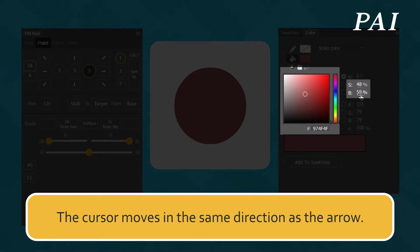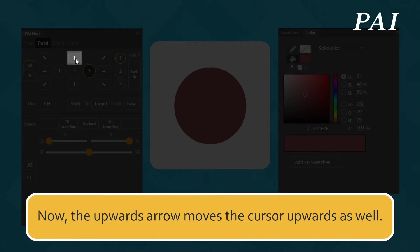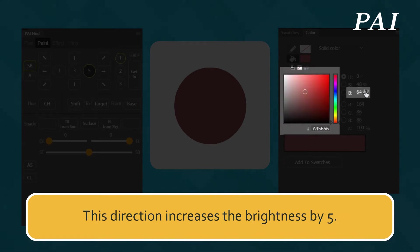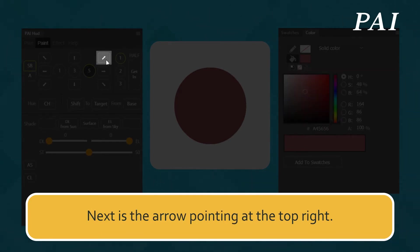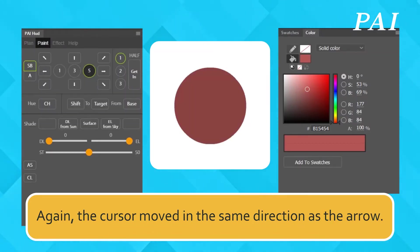The cursor moves in the same direction as the arrow. The upper-left direction decreases the saturation and increases the brightness by 5. The upward arrow moves the cursor upwards, which increases the brightness by 5. The arrow pointing to the top right increases the saturation and increases the brightness by 5. The cursor moved in the same direction as the arrow.